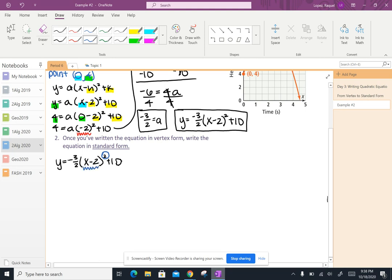hey, we're going to take this x minus 2 and multiply it by itself two times. So that looks like y equals negative 3 halves, x minus 2 times x minus 2 plus 10.